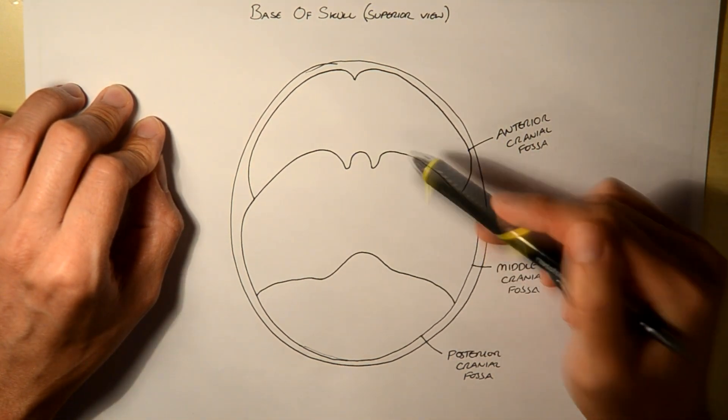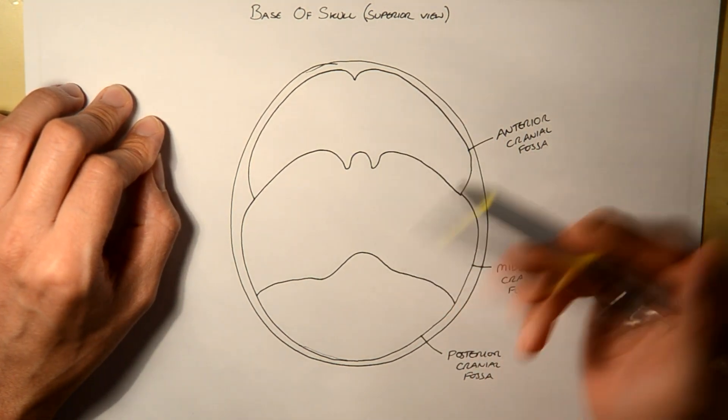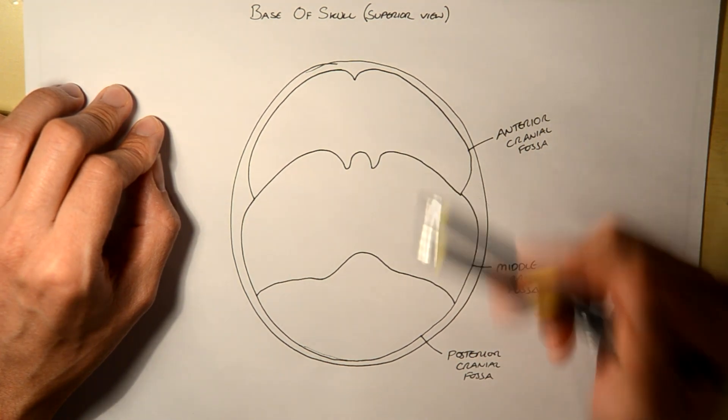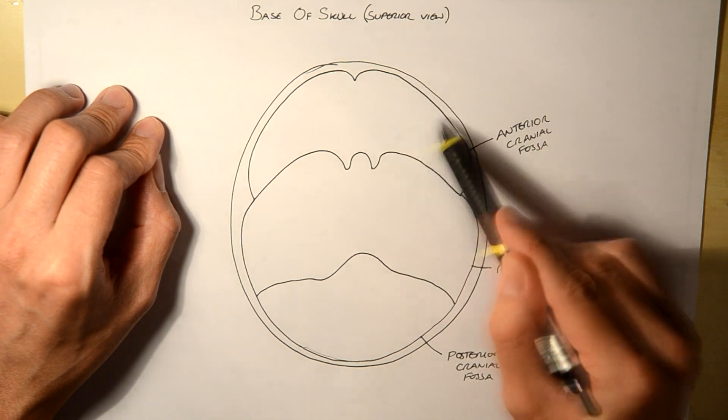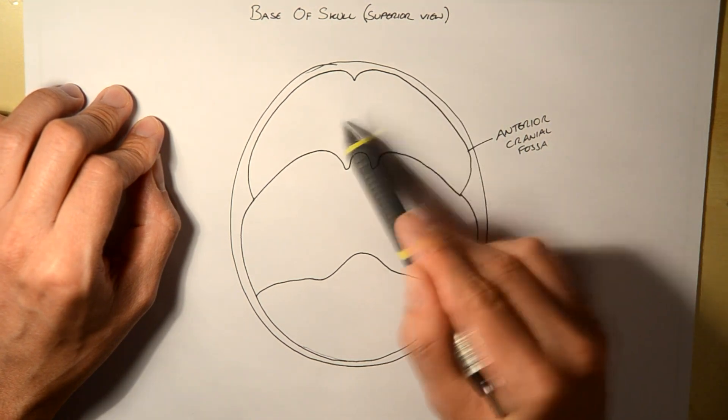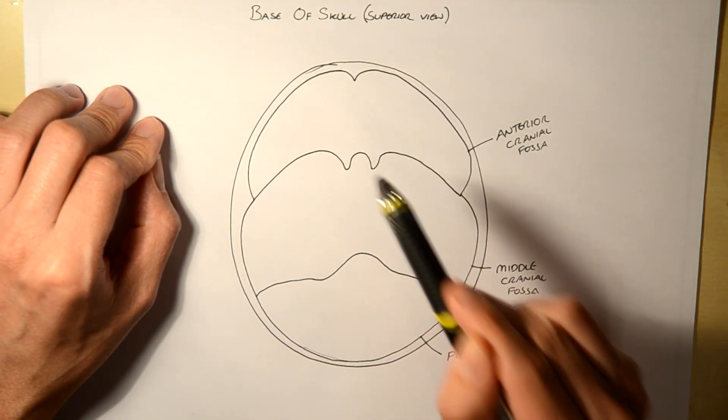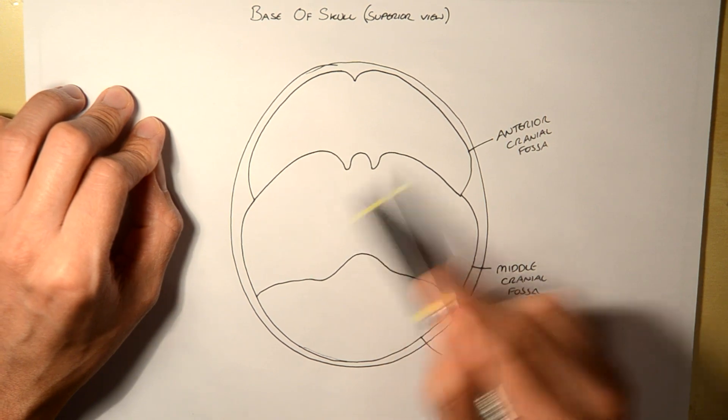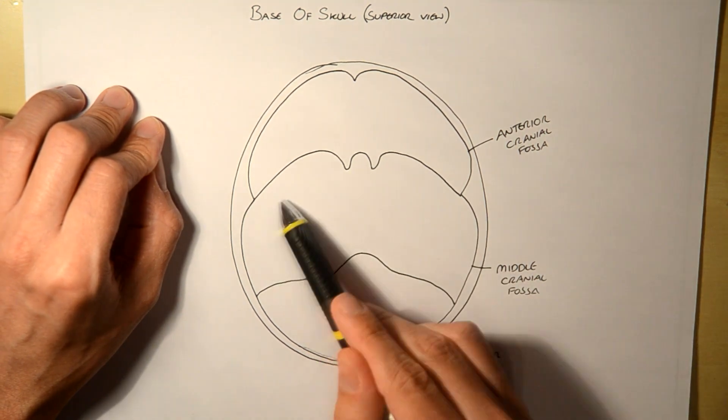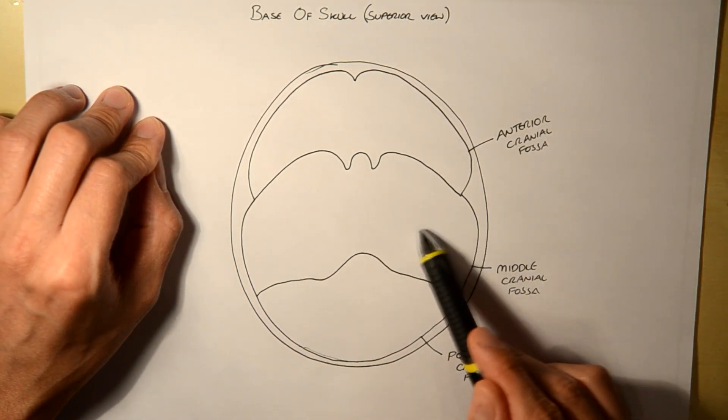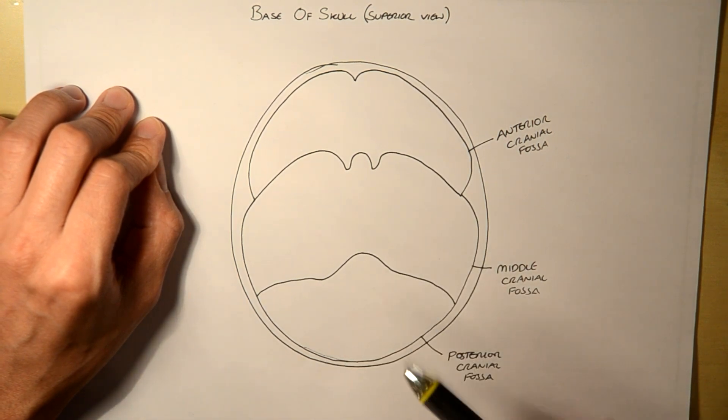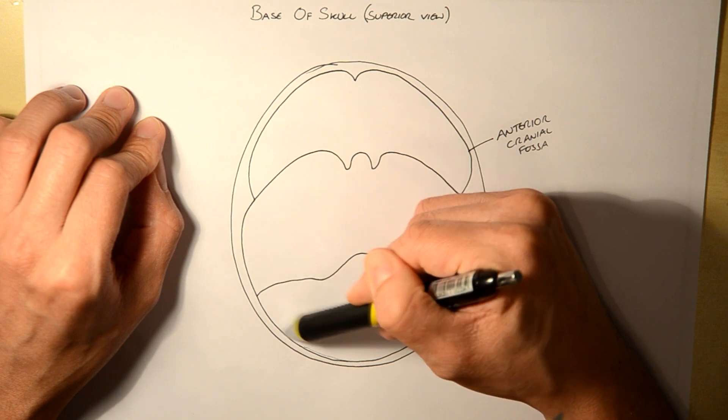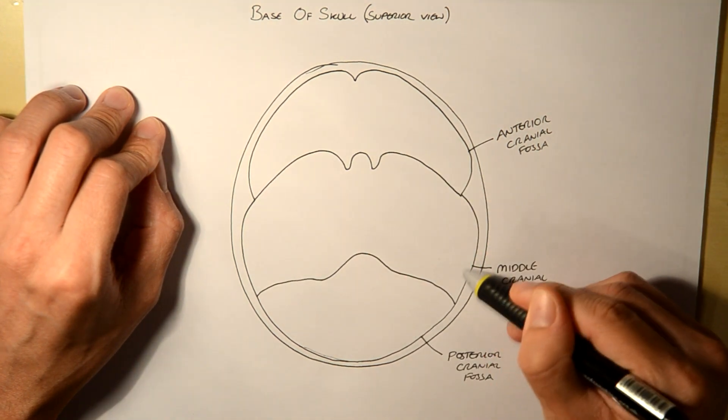I'm not going to cover this in loads of different pieces of text because mainly we want to look at the foramen and cranial nerves. However it's important to know that this around here is the frontal bone, ethmoid bone, sphenoid is here, temporal here and here, occipital here, and the parietal running just here and here.